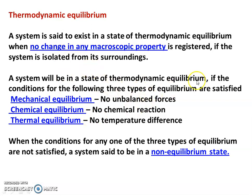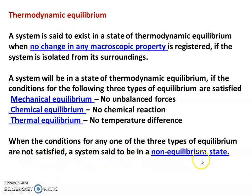When there is no change in any of the macroscopic properties, the system is settled in thermodynamic equilibrium. When the condition for any one of the three types of equilibrium is not satisfied, the system is said to be in a non-equilibrium state.